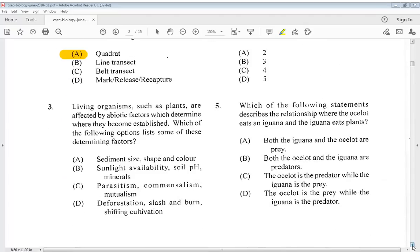Let's go to number three. Living organisms such as plants are affected by abiotic factors which determine where they become established. Which of the following options list some of these determining factors? The answer is B. Sunlight availability, soil pH, minerals.